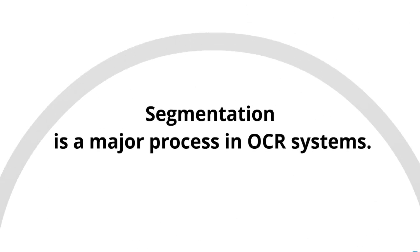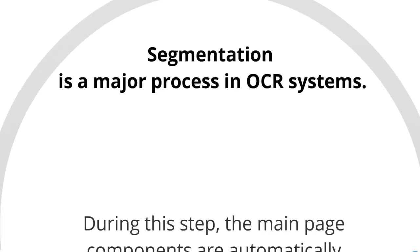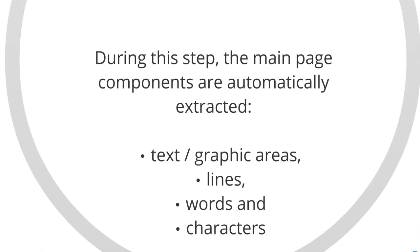Segmentation is a major process in OCR systems. It automatically detects the structure of one page and extracts its elements. Specific areas are detected, like text and graphics. In the text, further division on smaller components is made on line, word, or character level.